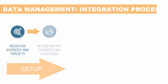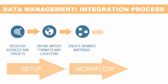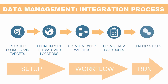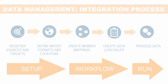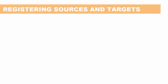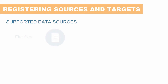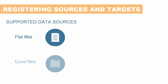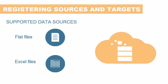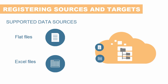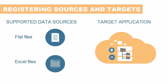General ledger integration with Data Management is a multi-step, user-driven process that requires no IT involvement. The process starts with registering data sources and targets. Data Management supports flat files and Excel files as data sources. These files can be report outputs from external systems. Data Management maps them to Profitability and Cost Management structures and then loads them. Profitability and Cost Management is registered automatically as the target.